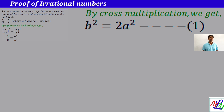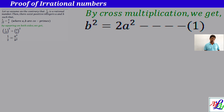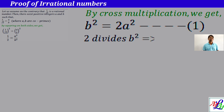We use the proven statement: if p is a prime and a is any positive integer, if p divides a square then p divides a. Using that statement, since 2 divides b square, we can conclude that 2 divides b also.